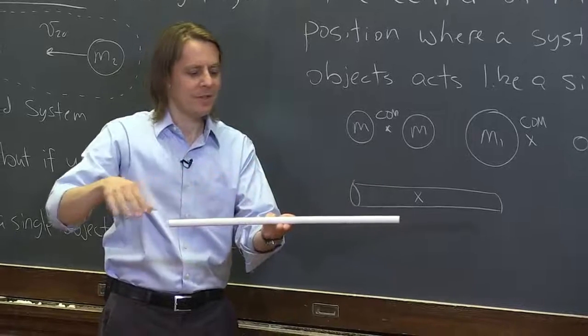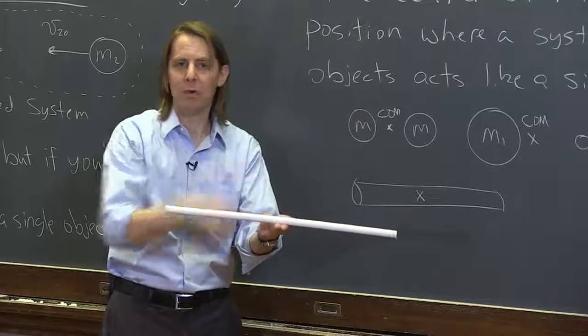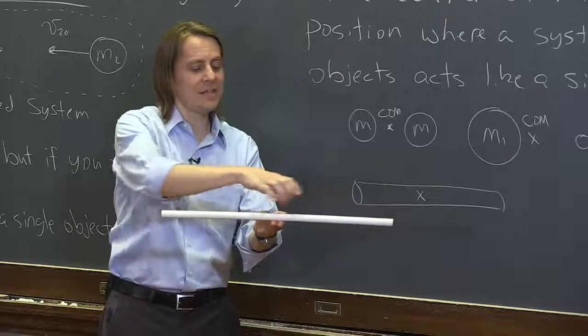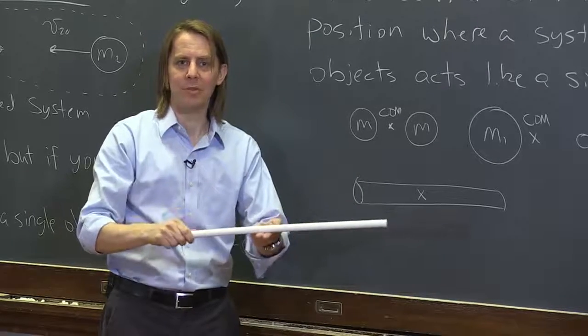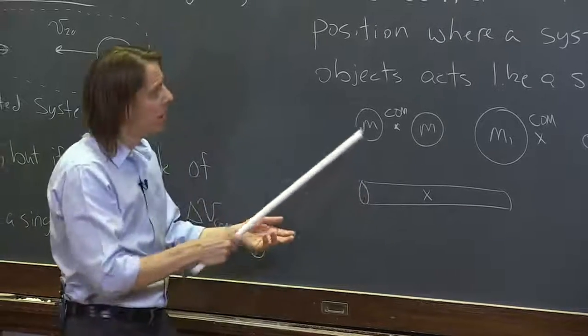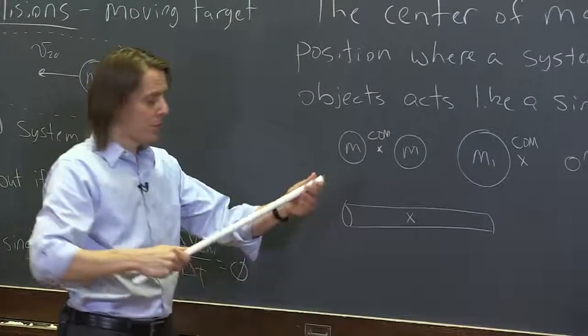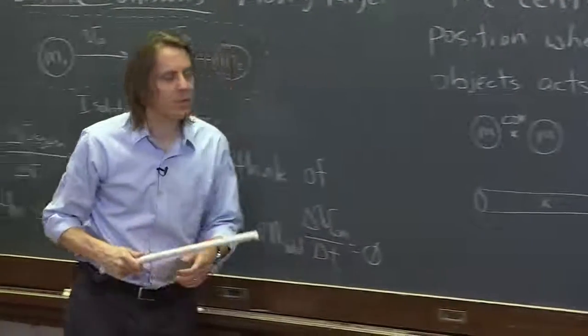So for a symmetric object like this, the center mass is always sort of what you would expect visually, the center, the point where it would balance. When objects get asymmetric, maybe it's denser over here than over here, then it can show up in strange places. But I just want to stress, that's the idea of the center mass. It's where a system of objects or an extended object acts like a single object. So now let's look and see how we can use this idea.